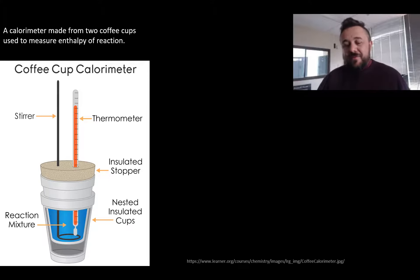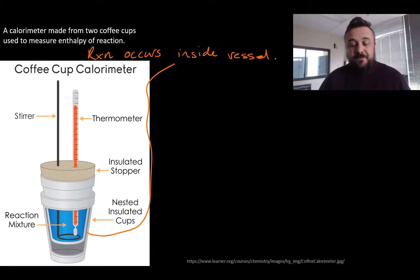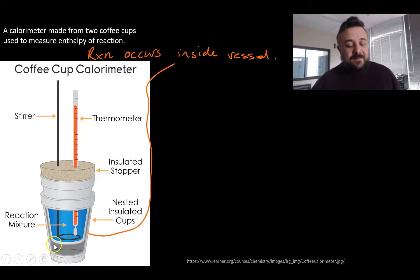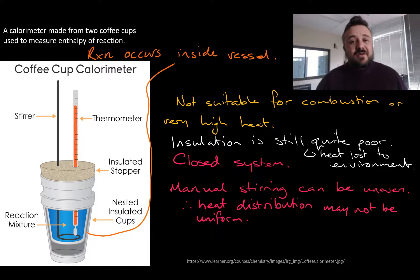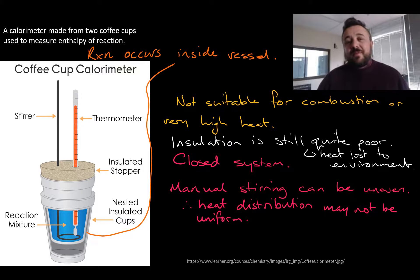Then there's the coffee cup calorimeter — it's a classic one. It's made from two styrofoam cups, and we use it to measure the enthalpy of reaction from within. The reaction occurs inside the vessel, and this is attempting to insulate it from the external environment. It's not suitable for combustion or very high heat because you'd melt it. Insulation is still quite poor, so a lot of heat is lost to the environment. It's a closed system, not an isolated system. Manual stirring can be uneven, which means the heat distribution may not be uniform, and this means we're going to have some accuracy issues.